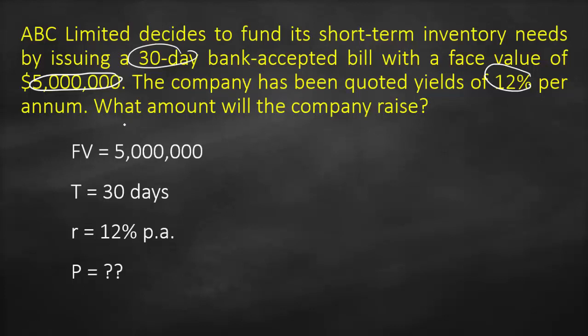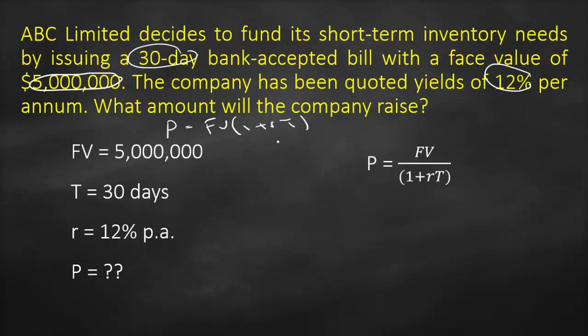This is an example of simple interest. The formula of simple interest is: Price = Future Value divided by (1 + R×T). We already have the future value, interest rate, and time, so we rearrange the formula to solve for the present value.